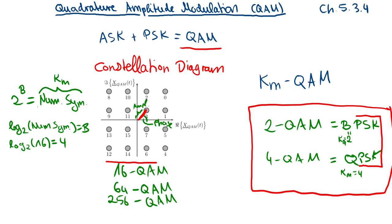When talking about QAM we want to encode more data in one symbol. You can technically choose any number of states, for example 24-QAM or 29-QAM. But since we deal with data generated by computers, we mainly use values that are a power of two so that we can encode a whole number of bits per symbol. This is why values like 16, 64, and 256 are most common.